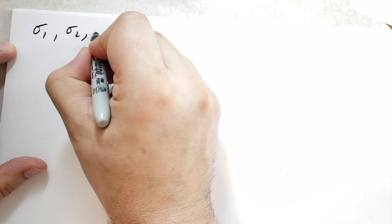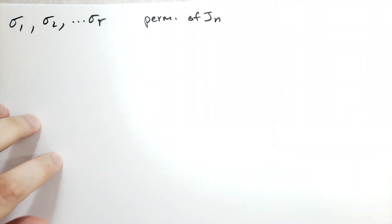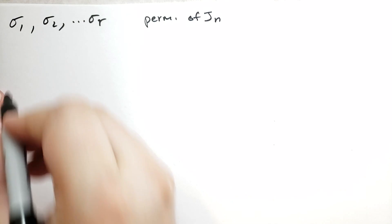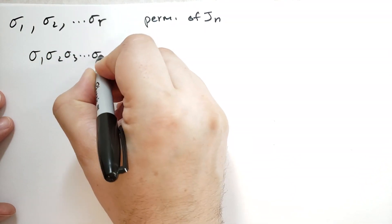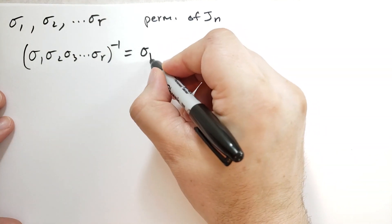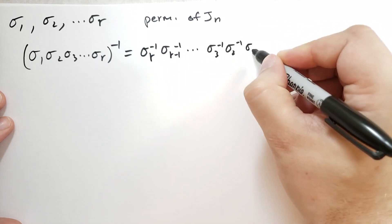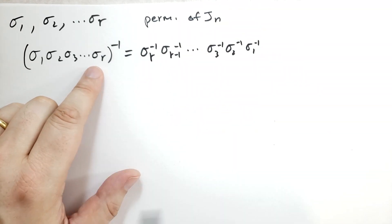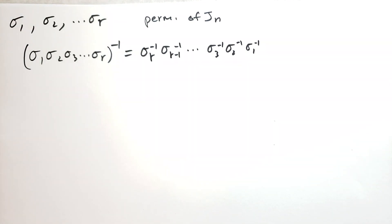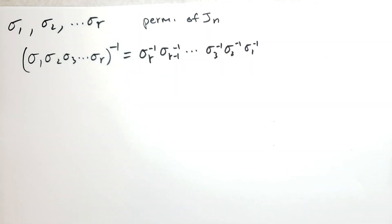If we have multiple sigmas — sigma_1, sigma_2, ..., sigma_r — that are all permutations of J_N, then the inverse of the composite permutation sigma_1 sigma_2 ... sigma_r should be sigma_r⁻¹, sigma_{r-1}⁻¹, ..., sigma_2⁻¹, sigma_1⁻¹. We have to combine these in reverse order, as we saw from the tail end of last lecture. If you're not sure why this works, you can compose this with that and see that you get the identity.